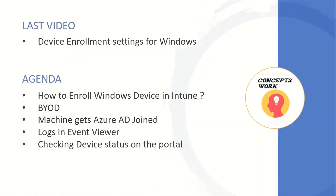If you're watching this series from the beginning, in the last video we discussed about device enrollment settings that need to be done on the portal, and we reviewed how to enable automatic enrollment for Windows as the platform. In this video, we will be choosing the BYOD method, wherein I will show you how to enroll a device by joining it to Azure Active Directory. We'll also check the logs being generated on the machine as well as the status of the device on the portal.